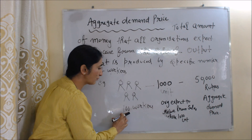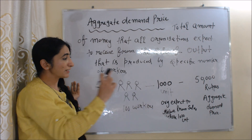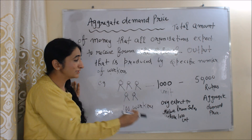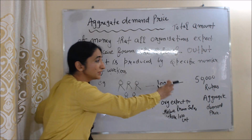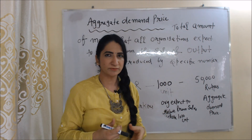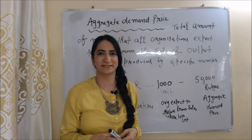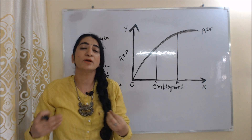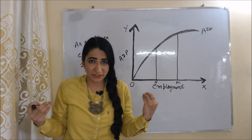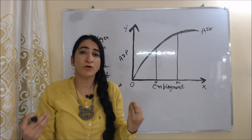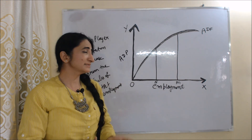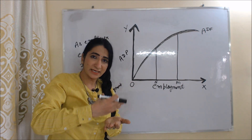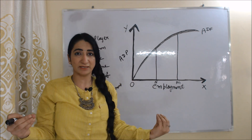For example, there are 100 workers and output produced by them is 1,000 units, and organizers expect to receive 50,000 rupees from the sale of these 1,000 units. This 50,000 rupees we call aggregate demand price. As employer expectations from the sale of output increase, employment will also increase. So aggregate demand price and employment both have a positive relation.